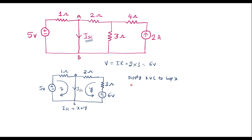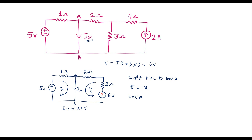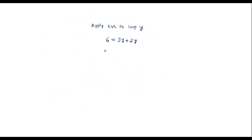Now let me apply KVL to loop X. We can say the voltage drop across the 1 ohm resistor is 1 times X. So X equals 5 amps. Similarly, applying KVL to loop Y: 6 equals the drop across the 3 ohm resistor plus the drop across the 2 ohm resistor, that is 3Y plus 2Y. So 6 equals 5Y. Therefore Y equals 6 divided by 5, which is 1.2 amps.